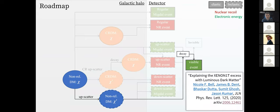The first paper I'll discuss chronologically is about explaining the Xenon1T excess with luminous dark matter. This is the scenario where you have upscattering of non-relativistic dark matter, which then decays, giving a visible event in the detector.